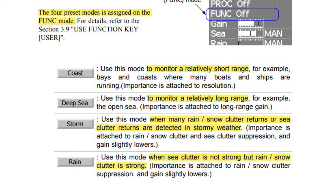Storm — use this mode when many rain/snow clutter returns or sea clutter returns are detected in stormy weather; importance is attached to rain/snow clutter and sea clutter suppression, and gain slightly lowers. Rain — use this mode when sea clutter is not strong but rain/snow clutter is strong; importance is attached to rain/snow clutter suppression.